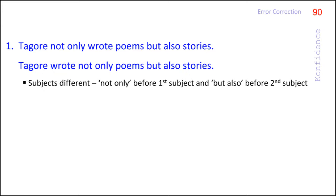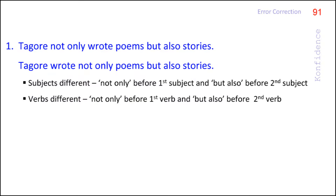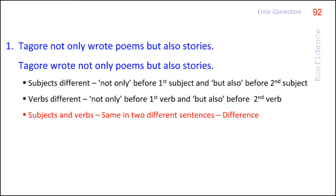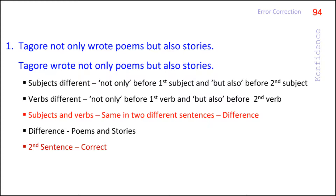The rule is: when two sentences have two different subjects, 'not only' must be placed before the first subject and 'but also' before the second subject. If the verbs are different, 'not only' goes before the first verb and 'but also' before the second verb. If subjects and verbs are the same, 'not only' and 'but also' should be placed where the difference comes. In this sentence, both subject 'Tagore' and verb 'wrote' are the same — the only difference is 'poems' and 'stories.' Hence, the correct sentence is 'Tagore wrote not only poems but also stories.'